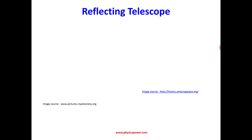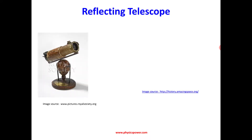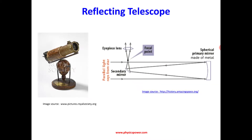Next, Newton designed the reflecting telescope. Looking at the block diagram, it consists of a plane mirror as well as a spherical mirror. Parallel rays from a long distance are incident on the spherical mirror, which focuses them onto the plane mirror, and you can see the image through the eyepiece. The advantage is that only reflection is happening, so the loss of intensity is very less throughout the system.